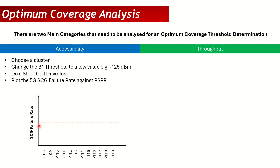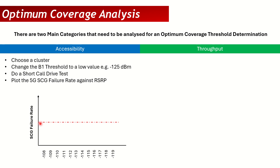You plot a map showing the SCG failure rate — the number of times the 5G session failed, whether the UE failed at RACH or had an RLC transmission causing a drop. All of that is captured in the 5G SCG failure rate. If your operator has a threshold, say 2%, you put a red line at 2%. You then map the number of failed short calls divided by total short calls against RSRP on the x-axis.